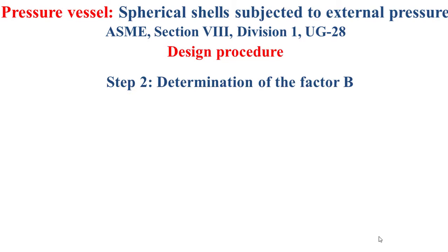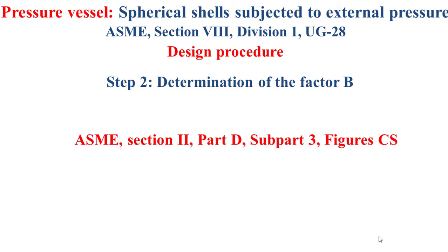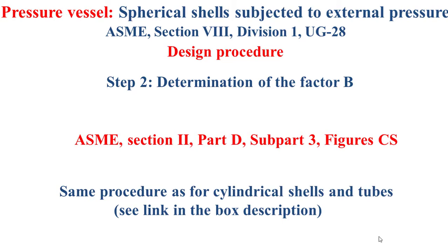Step 2 of this design procedure is about the determination of a certain Factor B, based on ASME Section 2, Part D, Subpart 3, Figure CS. The determination of Factor B is carried out with the same procedure as for cylindrical shells and tubes, which I explained in a previous video — you can see the link in the description box.